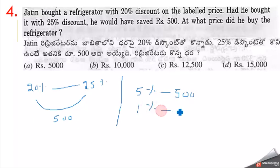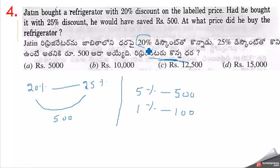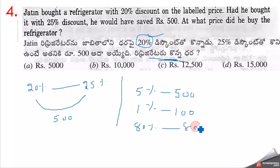1% means 100 rupees. We want to find the selling price. The list price is 100%. With 20% discount, the selling price is 80%. So 80% of list price equals the given selling price. 80 into 100 equals 8000.